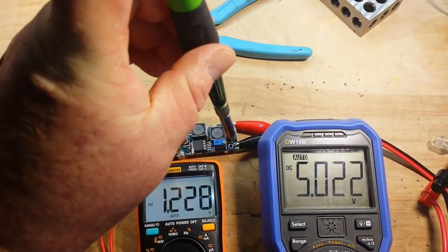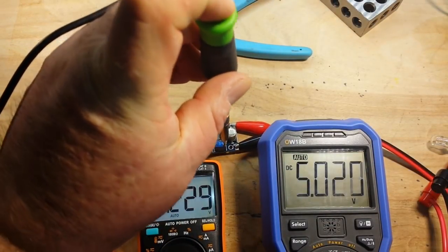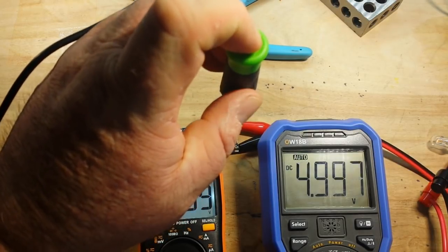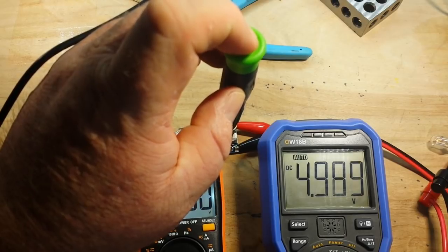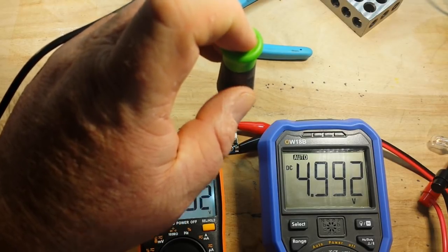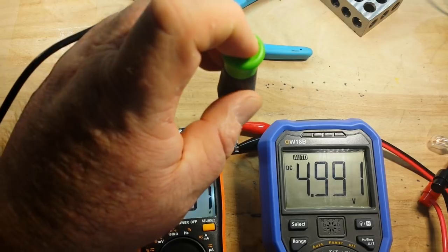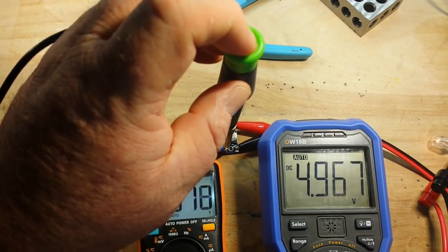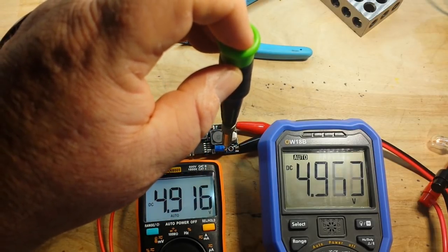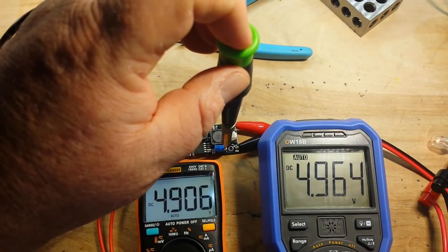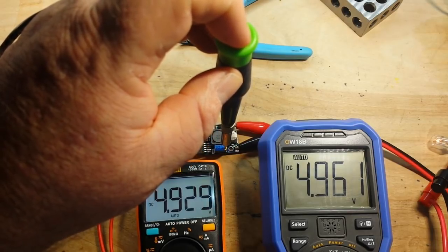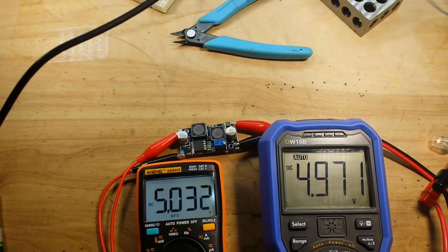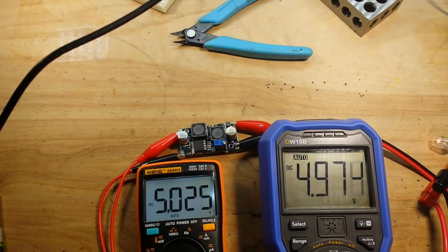But by adjusting this screw right here, I mean it is the only screw on here, I can crank the voltage up. Let's set the voltage for 5 volts, or as close as we can for 5 volts. The screw is a little bit on the touchy side.